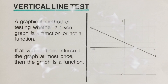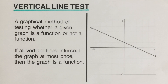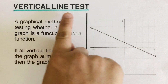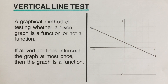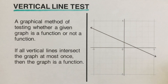Hello everyone! In this video, we are going to determine if a given graph is a function or not a function using the vertical line test. This test states that if all vertical lines intersect the graph at most once, then the graph is a function.